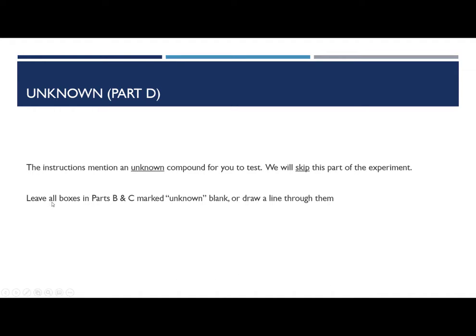Another change in the procedure, and one you'll probably be happy about, is the fact that we are not going to include an unknown in this experiment. Whenever you see a box marked unknown in part B and part C, just leave it blank. Or draw a nice single line through it. Part D asks you to identify whether the unknown is an alkene or an alkane. And since we are not doing those unknown tests, there's no reason for you to answer part D. So again, either leave it blank or draw a line through it.